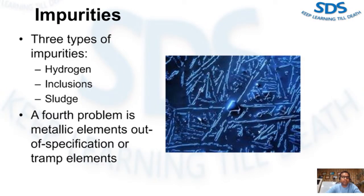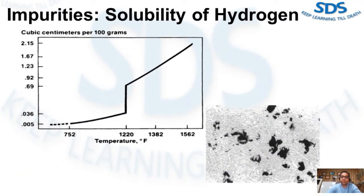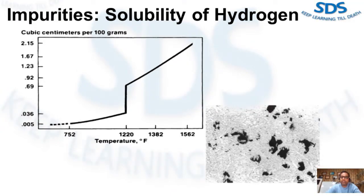Hydrogen is the only gas that is soluble to any appreciable extent in aluminum. This figure shows the solubility of hydrogen in both the liquid state and the solid state. There is a large decrease in the solubility of hydrogen in the solid state. If the hydrogen present in the liquid state is not removed or dispersed during the solidification process, porosity may result.